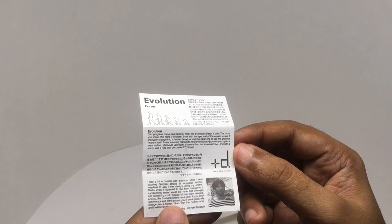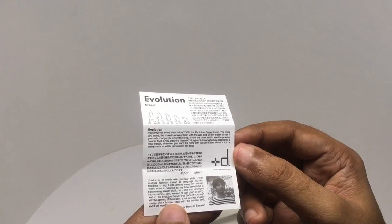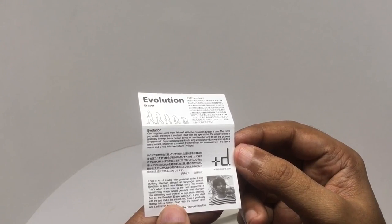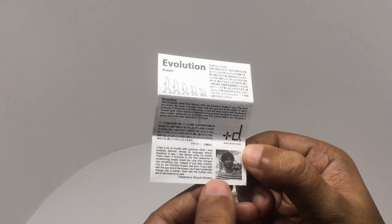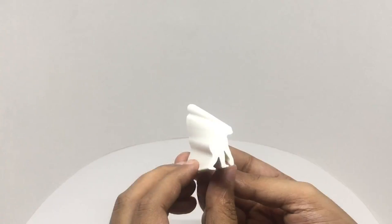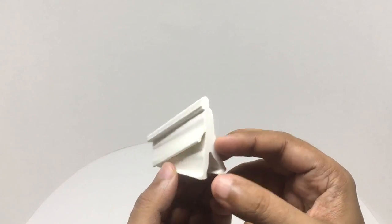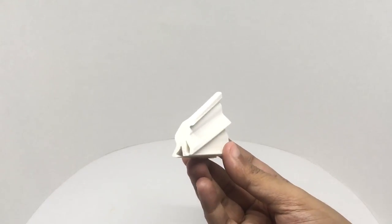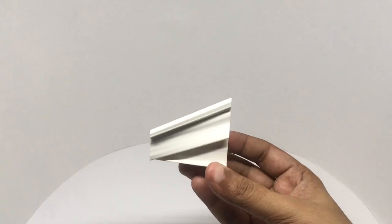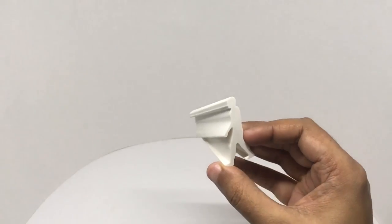It's more than just an eraser too. It's both a stamp and a nice little decoration, and some info about the designer. That's how it looks. I really want to cut it into a few pieces. I also want to keep it like this.